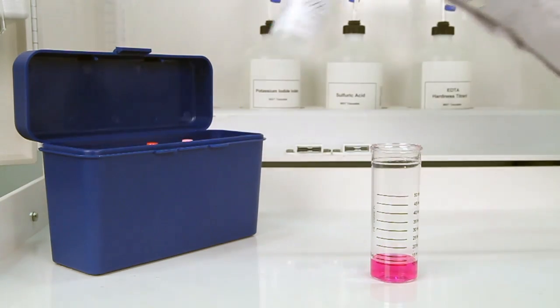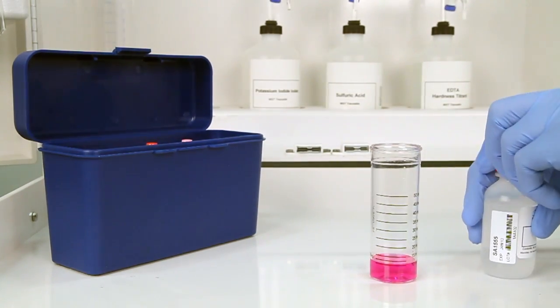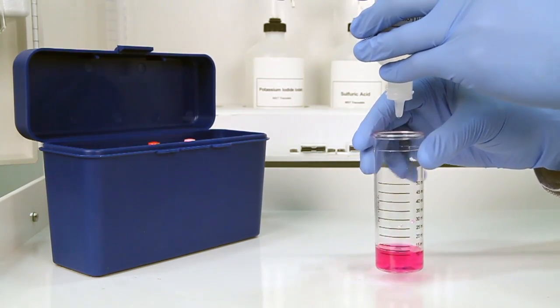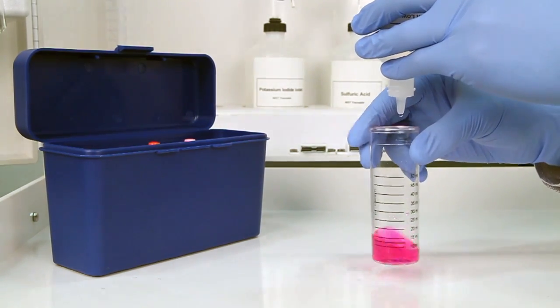The next step is to perform the titration using sulfuric acid 0.5 normal. Each bottle of titrant is labeled with the equivalency and sample size it was manufactured for.